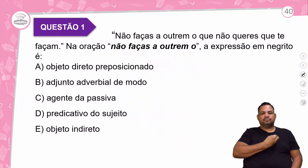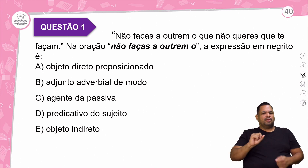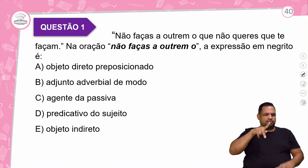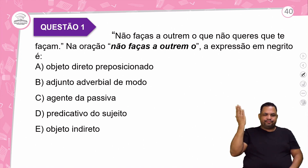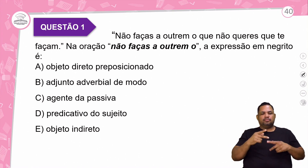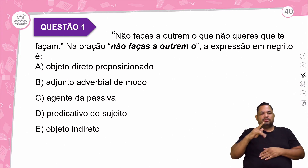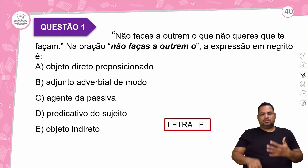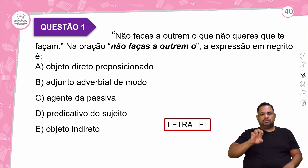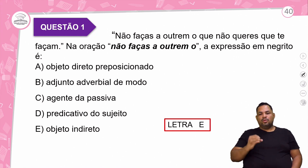Questão 1. Olha aqui na expressão: 'Não faças a outrem o que não queres que te façam'. A pergunta é: na oração 'não faças a outrem', a expressão em negrito é: A) objeto direto preposicionado, B) adjunto adverbial de modo, C) agente da passiva, D) predicativo do sujeito, E) objeto indireto. O gabarito é letra E. 'Outrem' é um pronome e o 'a' que está próximo é uma preposição — por isso, objeto indireto.